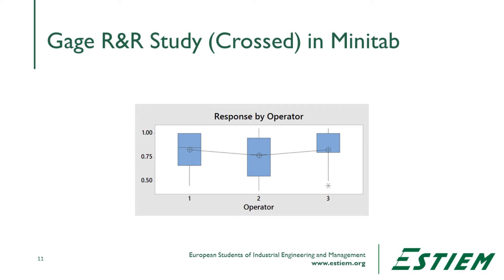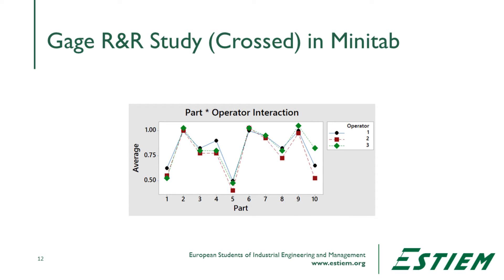The second chart is response by the operators. Basically they're in the same range of performance — they may not have assigned measurements the same way, but it's essentially a flat line showing no difference in their average response. The third chart shows the interaction effect — whether there's some interaction between the parts and the operators. Following one operator's line, it moves up and down while the other lines also move, showing there isn't consistently one way of measuring.